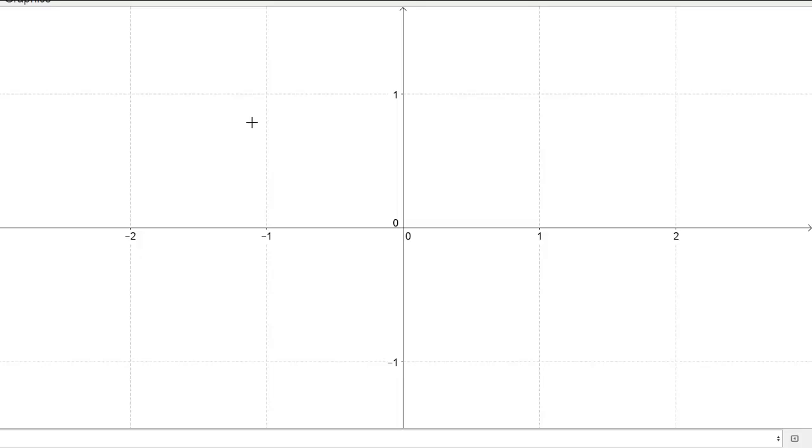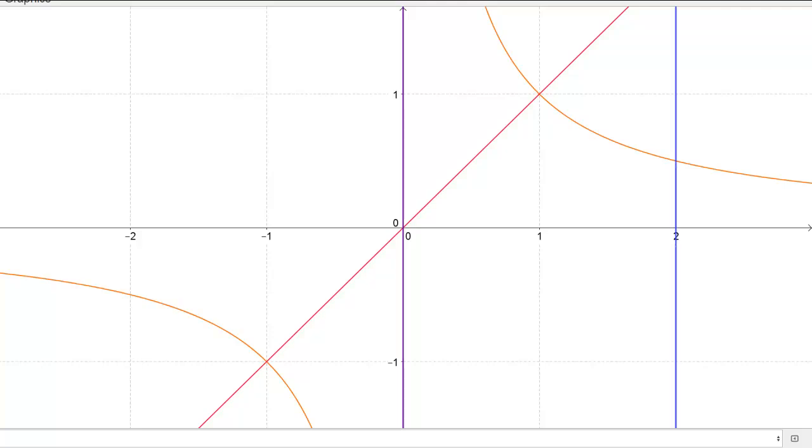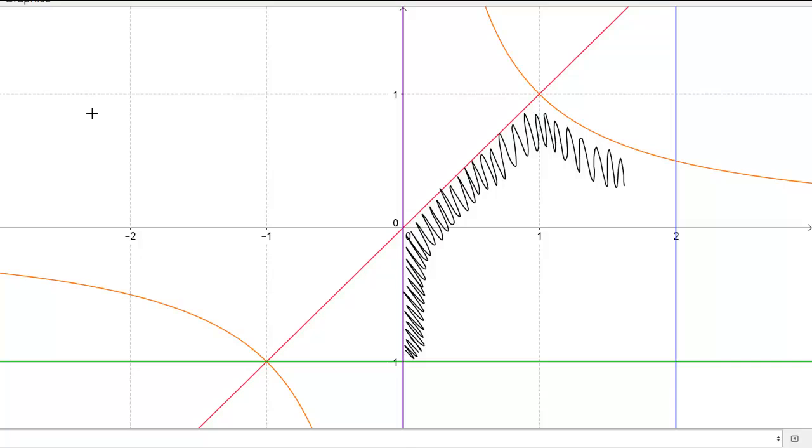The first function was the line y equals x, and then we have y equals 1 over x, the line x equals 0 which is just the y-axis, the line x equals 2, and the line y equals negative 1. I'm looking for the region that's bounded between all five of those functions. If I just shade in that region, it's right in here.